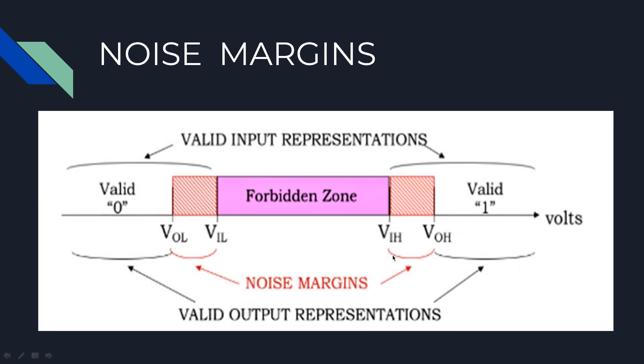The gap between VIL and VIH is called the forbidden zone. The noise margin can tell us how much noise can be added to a valid 0 or valid 1 of an output signal and still have results interpreted correctly at the inputs to which the other circuits are connected. The gaps between the input and output voltage thresholds VIL and VIH are called the noise margins.